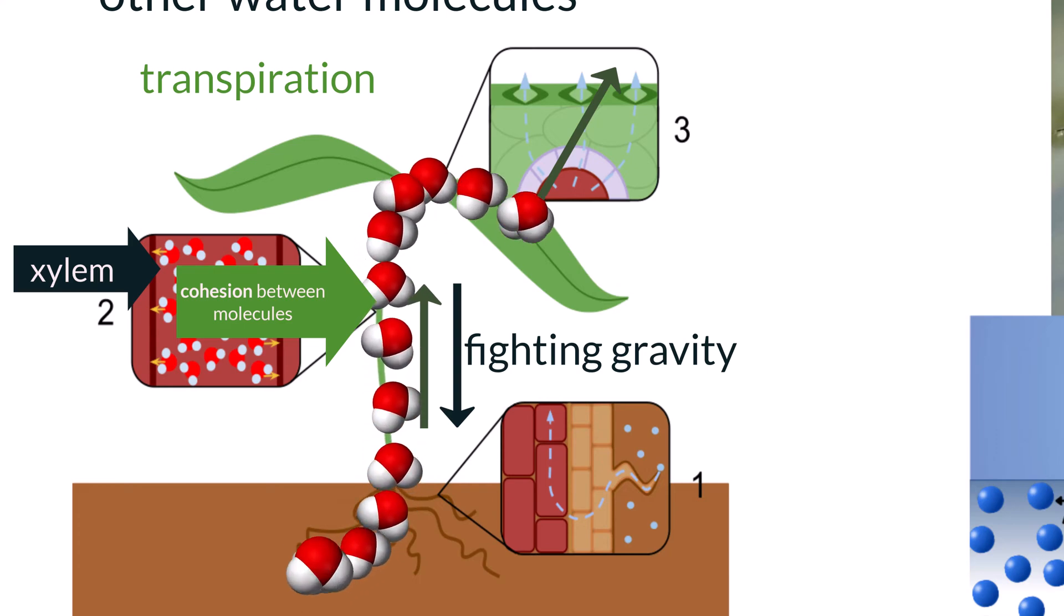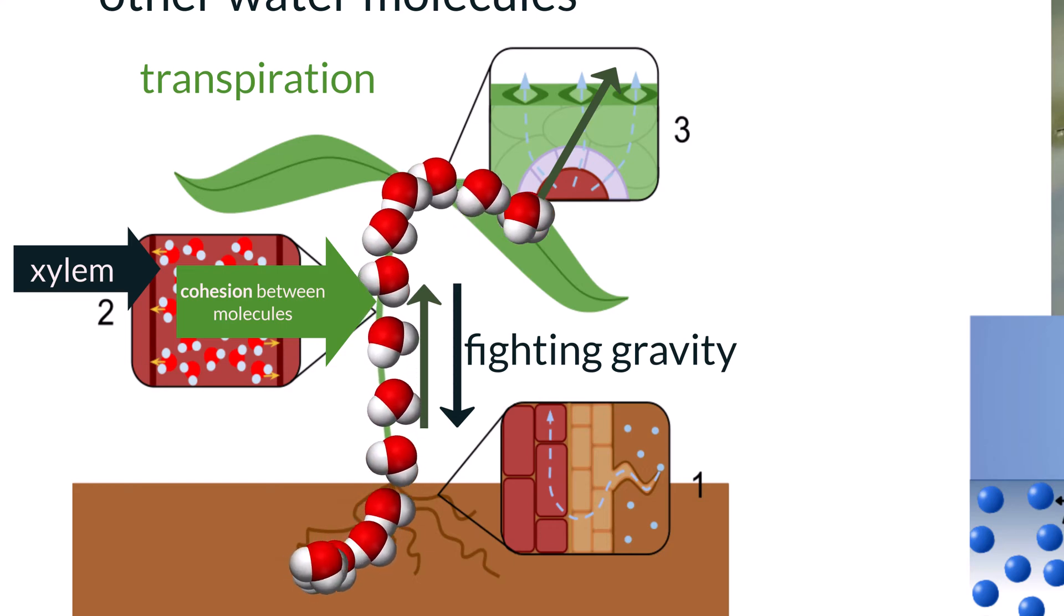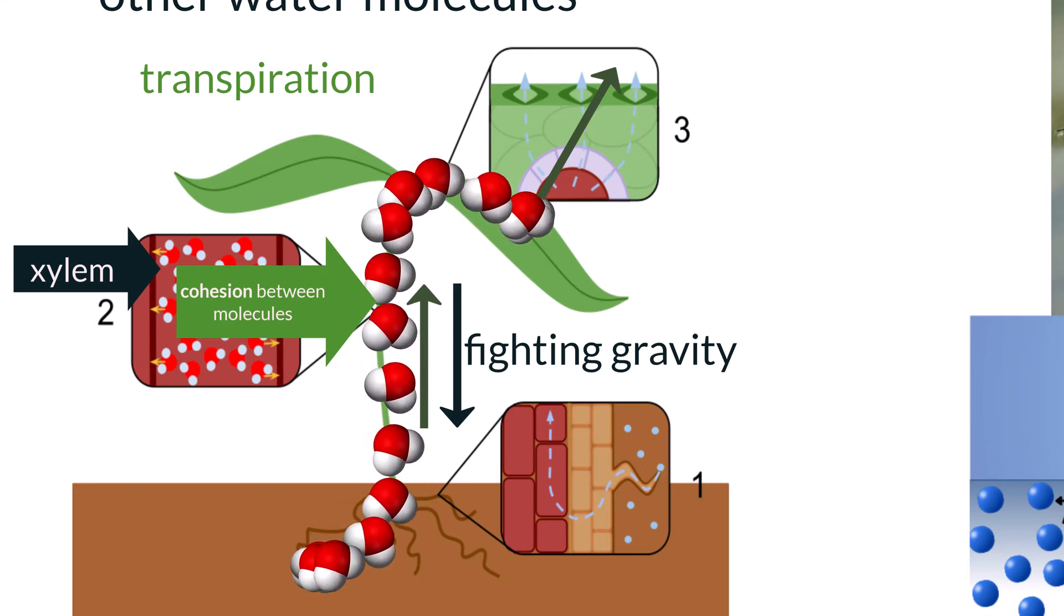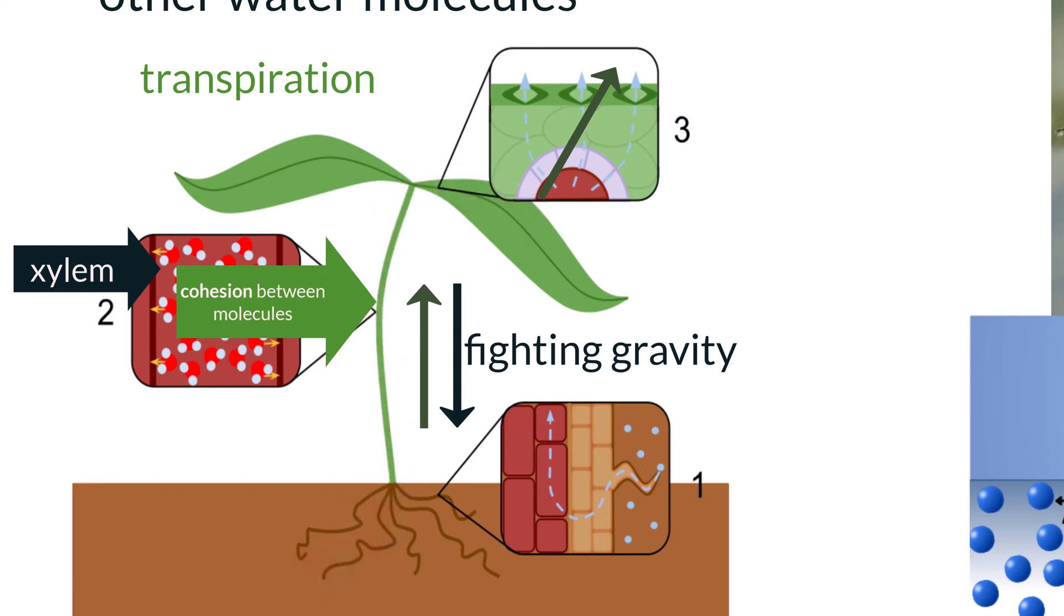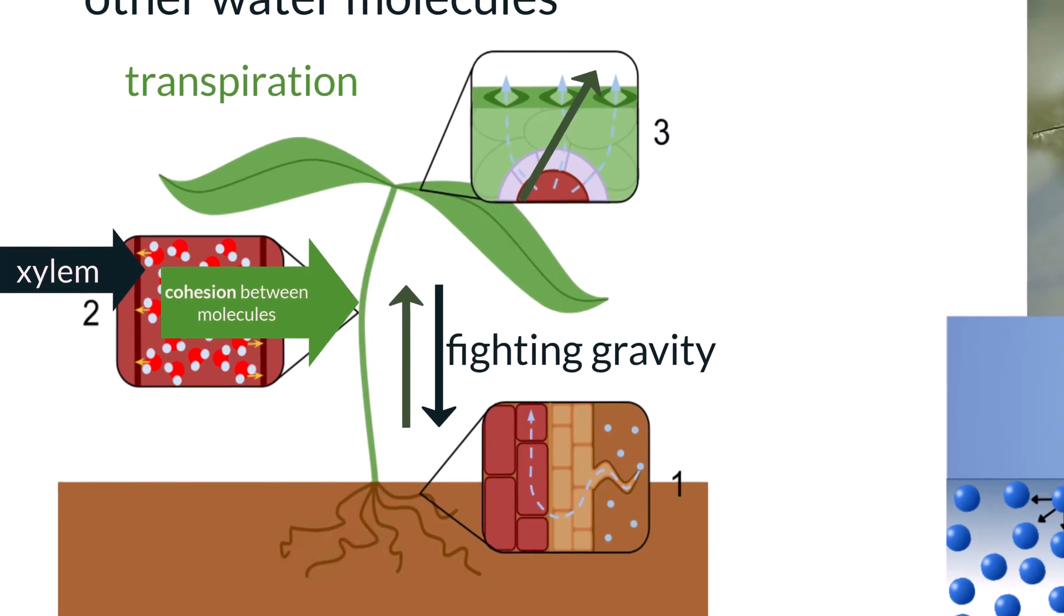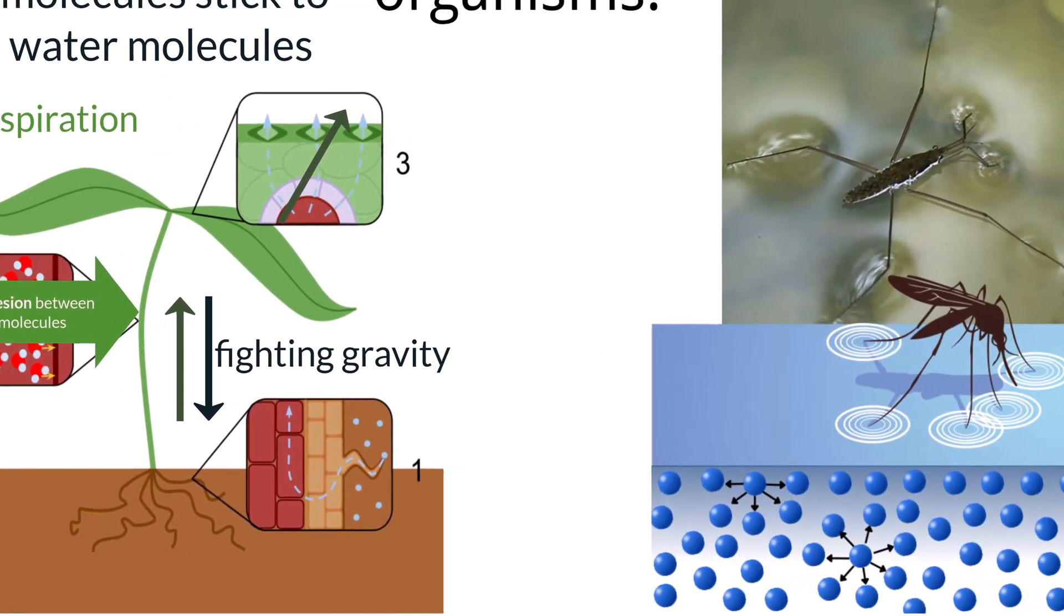This tension created by transpiration pulls the next water molecule up, and because all of the water molecules are held together by cohesion, it ends up pulling all of them up together, all the way down to the roots. There are other forces at play here which we will discuss later, but this is how cohesion plays an important role in addition to plant xylem function.